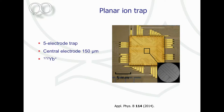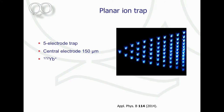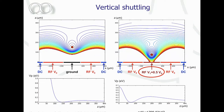Our guinea pig is ytterbium ions. This trap works very well — here you see one ion, two, three, four, and so on over time, and you can keep them for many hours. Now the important thing is we want to change the distance between the ion and the trap, and there's an experimental trick applied here that is not completely trivial.